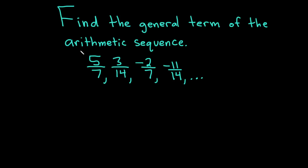Hello. In this video, we're going to do a problem involving arithmetic sequences. The question says, find the general term of the arithmetic sequence, and the sequence terms are 5 over 7, 3 over 14, negative 2 over 7, negative 11 over 14, and the three dots indicate that it goes on forever.